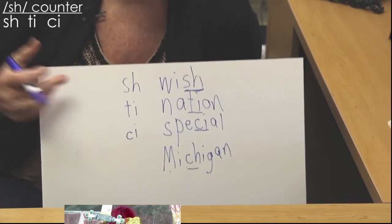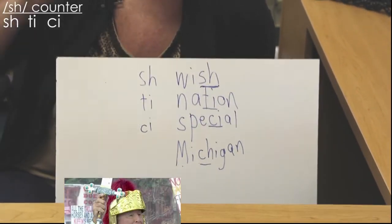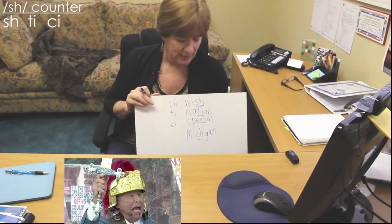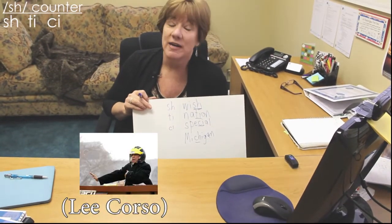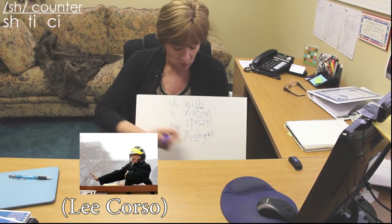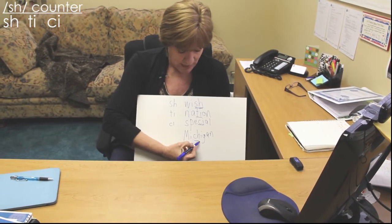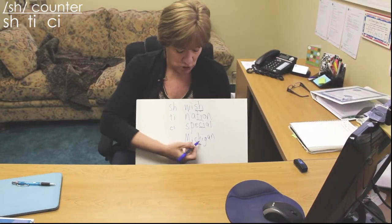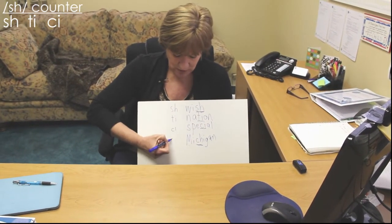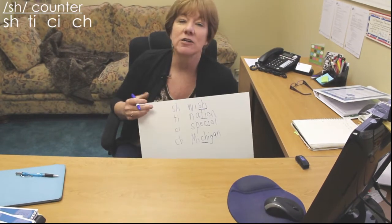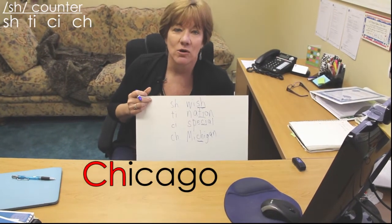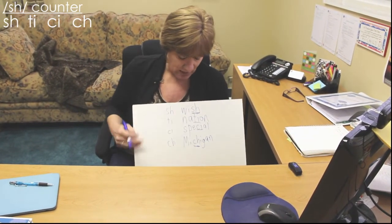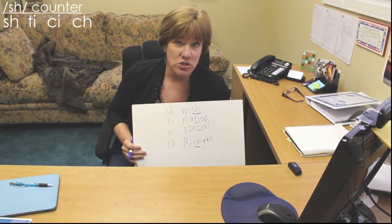Pay attention and notice that when you get a 'ch' in a word like 'Michigan,' it's spelling the 'sh' sound. This is also the case in 'Chicago' or 'champagne.' So 'ch' is another way to spell the 'sh' sound, and these are your top four ways to spell it.